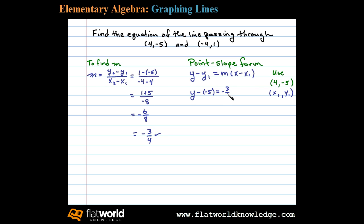Substituting, we have y - y₁, which is -5, equals m, which we found to be -3/4, times (x - x₁), which is 4. Once we substitute into point-slope form, we can then simplify and present our answer in slope-intercept form. In this case, minus negative 5 is plus 5.